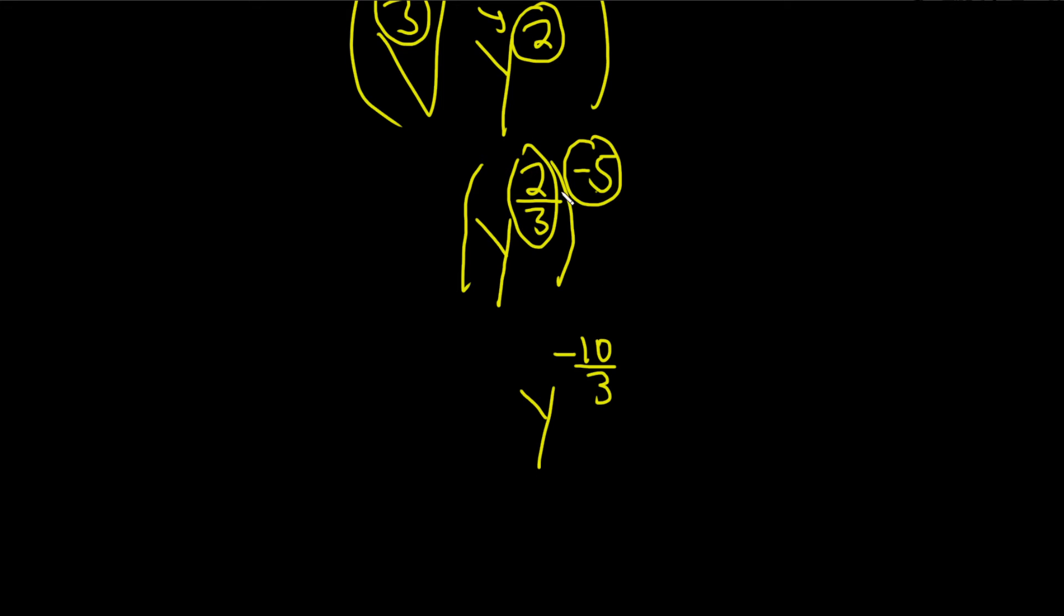Because negative 5 times 2 is negative 10. We're multiplying 2 thirds times negative 5. It's really negative 5 over 1, so you get this.